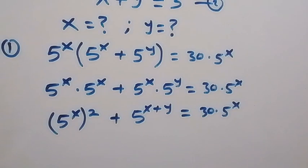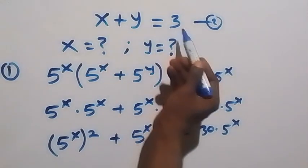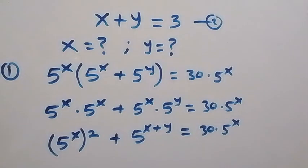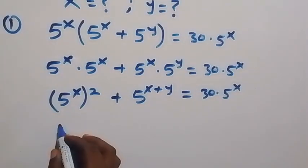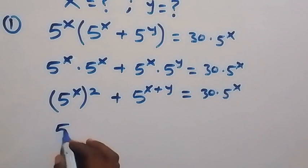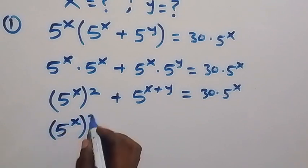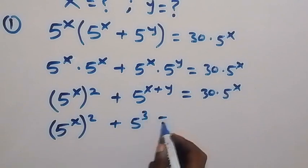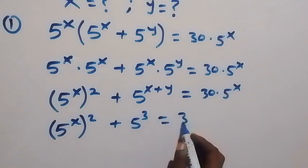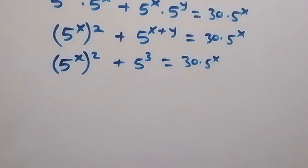From equation 2, we know x plus y equals 3. Substituting that in, we can write 5 raised to power x, all squared, plus 5 raised to power 3, which equals 30 times 5 raised to power x.